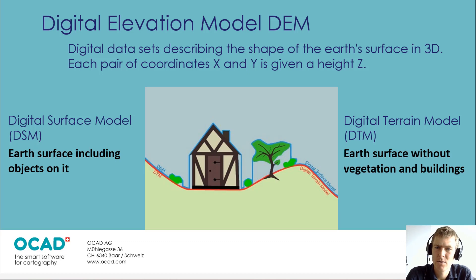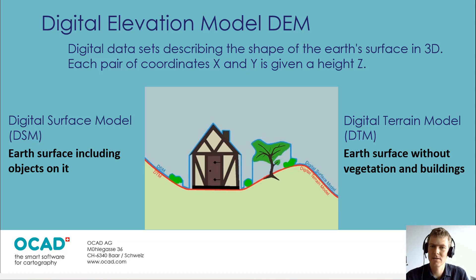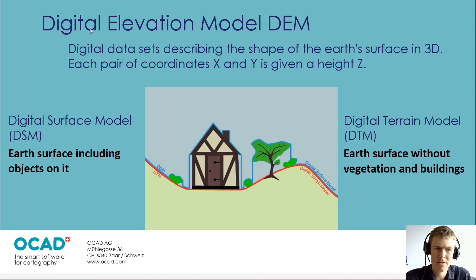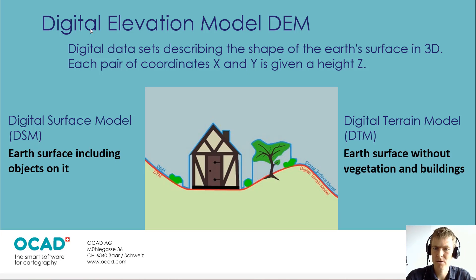Basically, each point on the earth's surface gets a height value. The term digital elevation model, or DEM, is more a summary and includes digital surface models and digital terrain models.